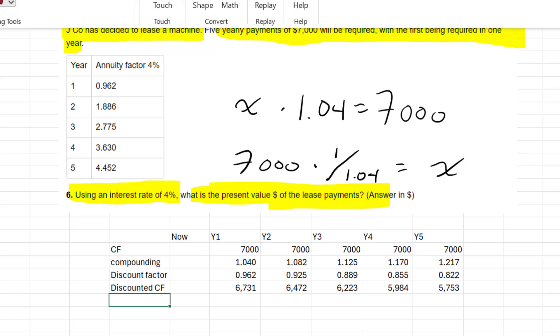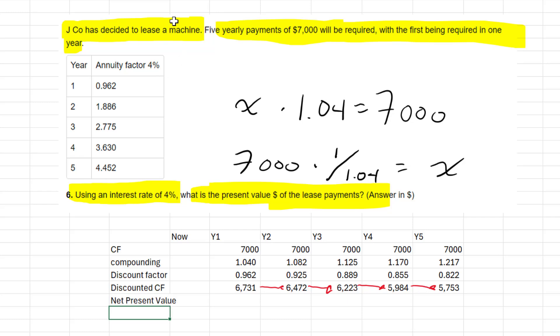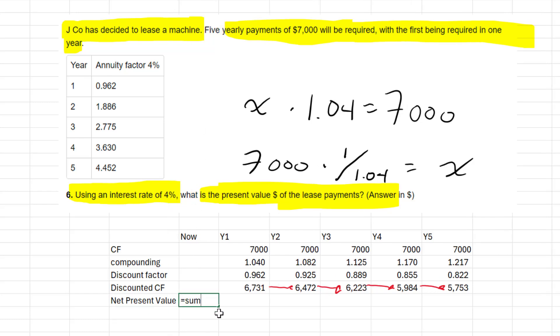Now notice that the number is getting smaller. And that's a sanity check that we have applied the correct principle. In other words, $7,000 in year five is only worth $5,753 to me today because I would be earning interest if I wasn't paying for this machine. So the answer then, the net present value of those lease payments, will be equal to the sum of the five individual present values and we get $31,163.